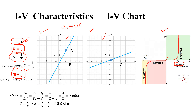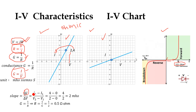From the slope of this chart we can calculate the value of conductance. Conductance G equals delta I divided by delta V — the change in current divided by the change in voltage. So the slope of this chart is the change in the Y-direction divided by the change in the X-axis. On the Y-axis we have current (I) and on the X-axis we have voltage. Consider the point (2, 4), where 2 indicates the voltage and 4 indicates the current.